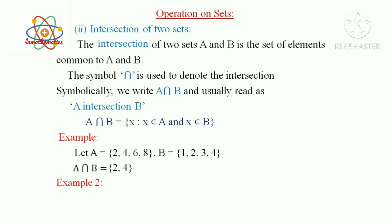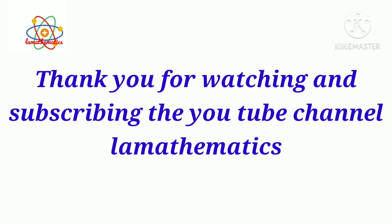For more clarification, consider Example 2. Let Capital P = {1, 3, 5, 7, 9}, Capital Q = {2, 3, 5, 6}. We have to find P ∩ Q, that is elements common to Capital P and Capital Q. It is clear that the common elements are 3 and 5. Hence we can write P ∩ Q = {3, 5}.